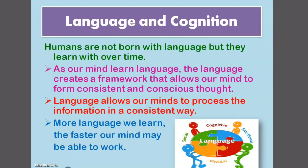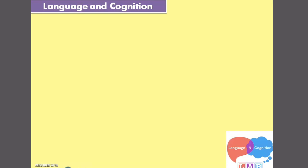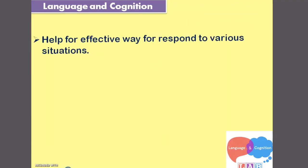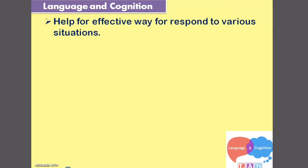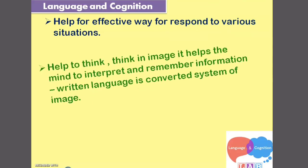The more language we learn, the faster our mind may be able to work — the faster will be the cognitive development. For example, small children grow their cognitive aspect on the basis of language. First they learn language, and after that their cognitive processes start. This helps them to respond in an effective way based upon the situation — that is problem solving.